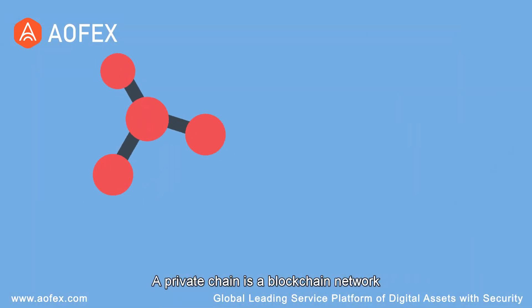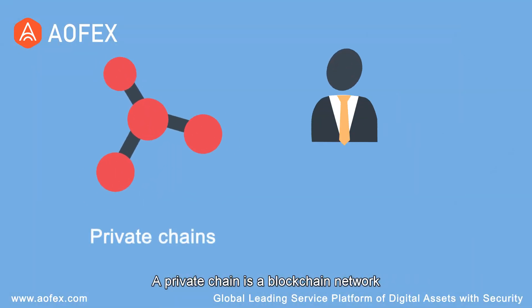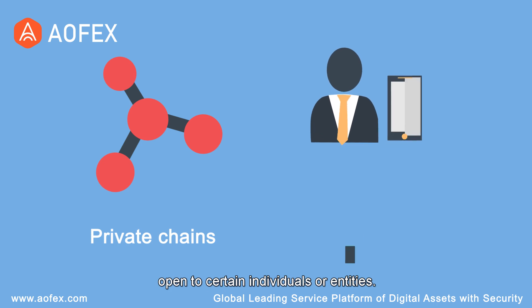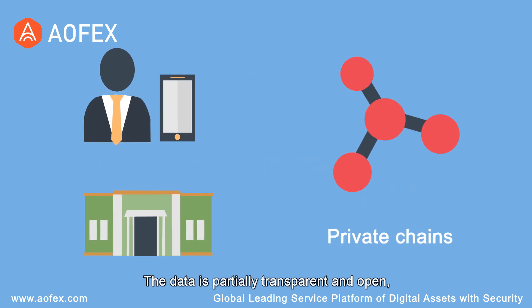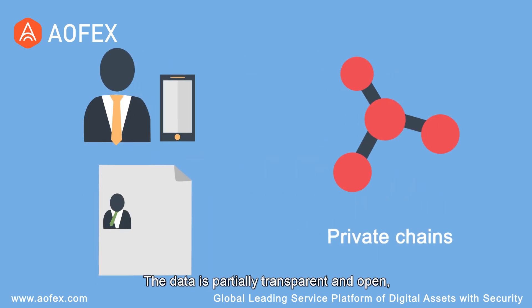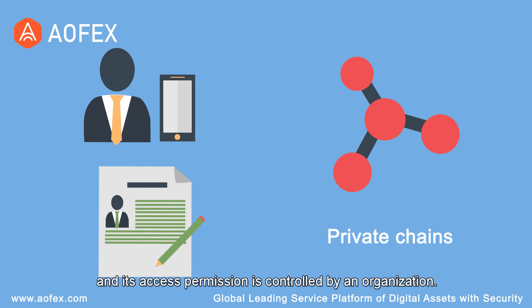A private chain is a blockchain network open to certain individuals or entities. The data is partially transparent and open, and its access permission is controlled by an organization.